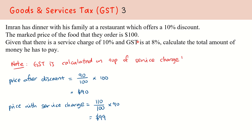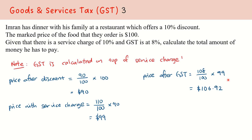We next proceed to take into account the GST. GST is counted on top of the price of the food and the service charge. So the price after GST will be 108% of $99. Thus, 108 over 100 times $99 gives us $106.92. Therefore, the total amount of money that Imran has to pay will be $106.92.